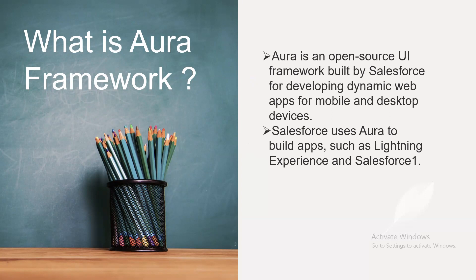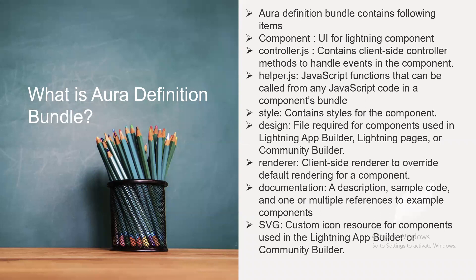What is an Aura definition bundle? The Aura definition bundle contains the following items: a Component file (the UI for the Lightning component), a Controller.js (contains client-side controller methods to handle events), and a Helper.js (JavaScript functions that can be called from any JavaScript code within the component bundle).